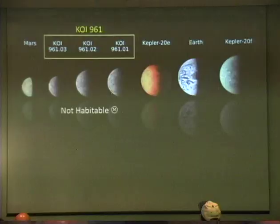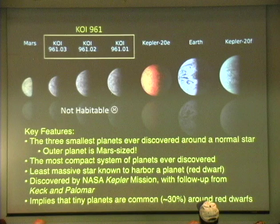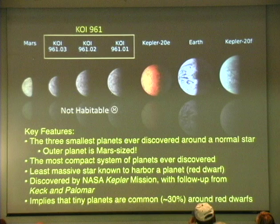The key points about Kepler-42, formerly known as KOI 961: these are the three smallest planets ever discovered around a normal star, including a Mars-sized planet. It is the most compact system of planets in terms of size and orbital periods, and the least massive star known to harbor a planet. It was all thanks to the NASA Kepler mission with follow-up on the ground from Keck and Palomar observatories, and it implies that these tiny planetary systems are common — maybe as much as 30% throughout the galaxy.